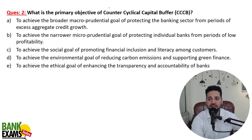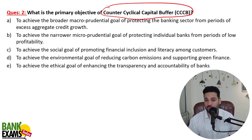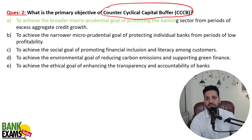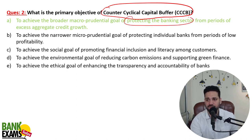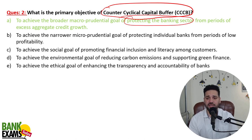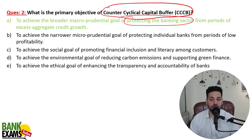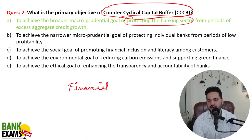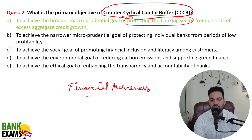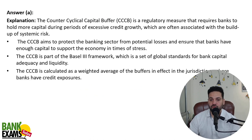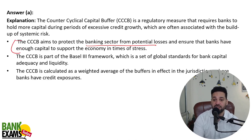The primary objective of the Counter-Cyclical Capital Buffer (CCCB) is: during periods of credit growth, banks need an additional buffer. CCCB is required to achieve the broader macro-prudential goal of protecting the banking sector from periods of excess aggregate credit growth. Please go through the Basel III norms video in the financial awareness section of the RRB Scale 3 course — I have already explained CCCB there. It aims to protect the banking sector from potential losses and ensure banks have enough capital to support the economy in times of stress.